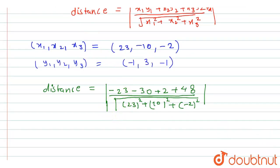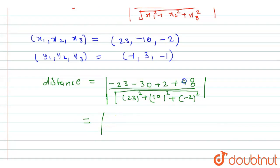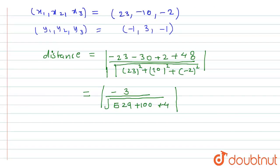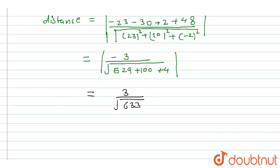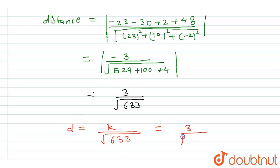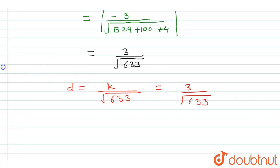On solving: -23 - 30 + 2 + 48 = -3 in the numerator. The denominator is √(529 + 100 + 4) = √633. So the distance equals 3/√633. Since the given expression in the question is k/√633, and this equals 3/√633, we can find that k = 3.